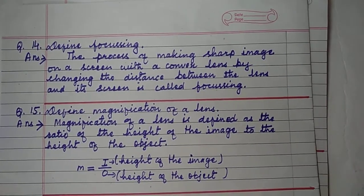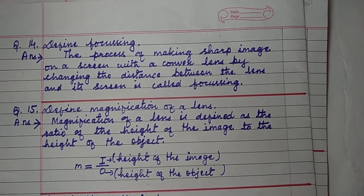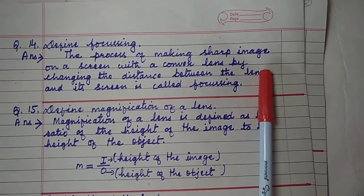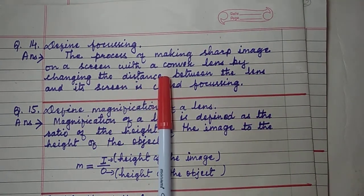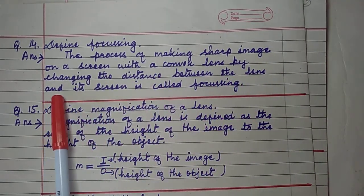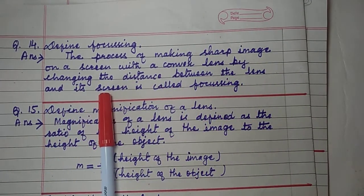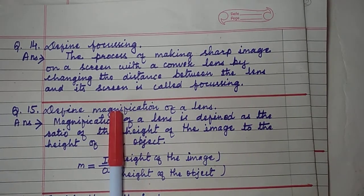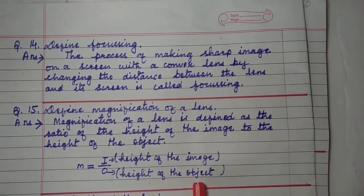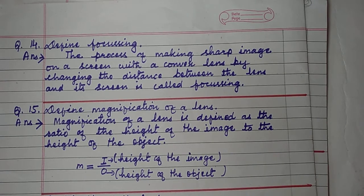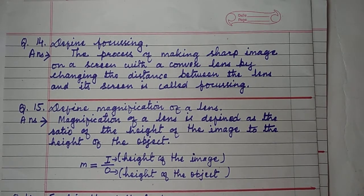Define focusing. The process of making a sharp image on a screen with a convex lens by changing the distance between the lens and the screen — moving forward or backward to ensure that a sharp image is formed on the screen — is called focusing.